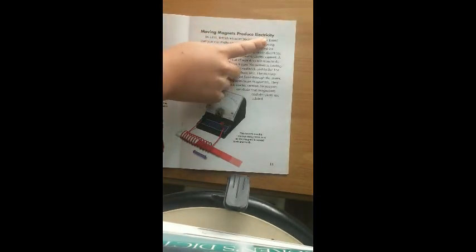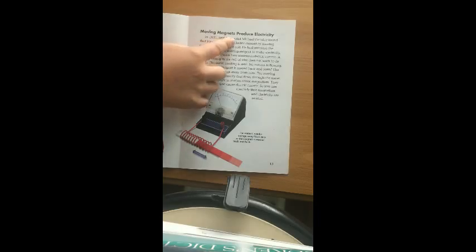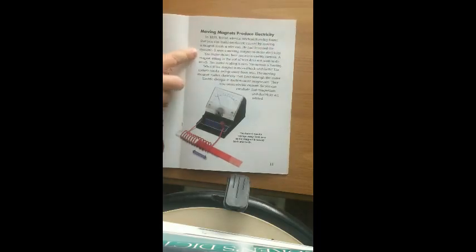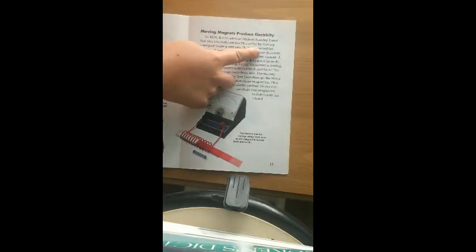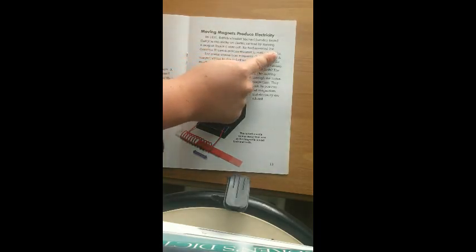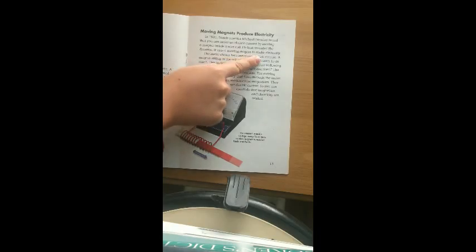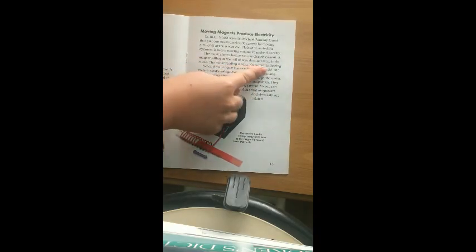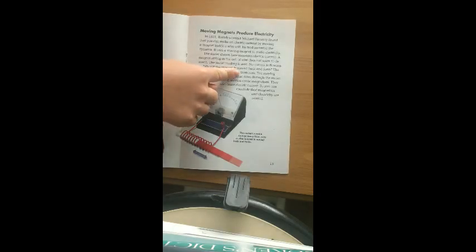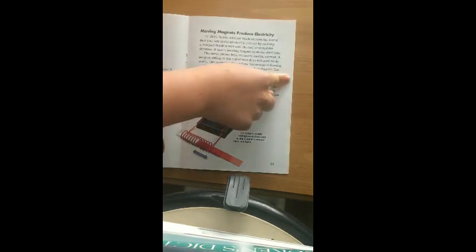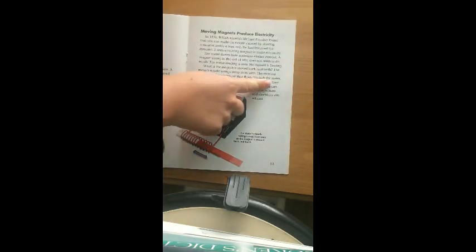Moving magnets produce electricity. In 1831, British scientist Michael Faraday found that you can make an electrical current by moving a magnet inside a wire coil. He had invented the dynamo. It uses a moving magnet to make electricity. The meter shown here measures electric current. A magnet sitting in the coil of wire does not seem to do much. The meter reading is zero. No current is flowing. What if the magnet is moved back and forth? The meter's needle swings away from zero. The moving magnet makes electricity that flows through the meter.